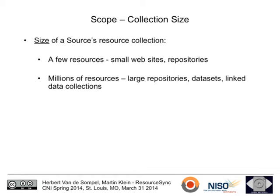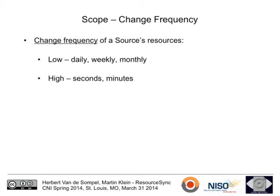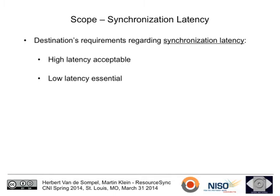First parameter: the size of a source's collection. We wanted a solution that works for really small resource collections — a little museum site with a couple of objects — all the way up to really large repositories, like Elsevier's millions of resources. Change frequency: we have a range from very slowly changing resources — weekly or monthly — to extremely rapidly changing things like Wikipedia or DBpedia, where we measured changes of about two per second. We want to cover that full spectrum.